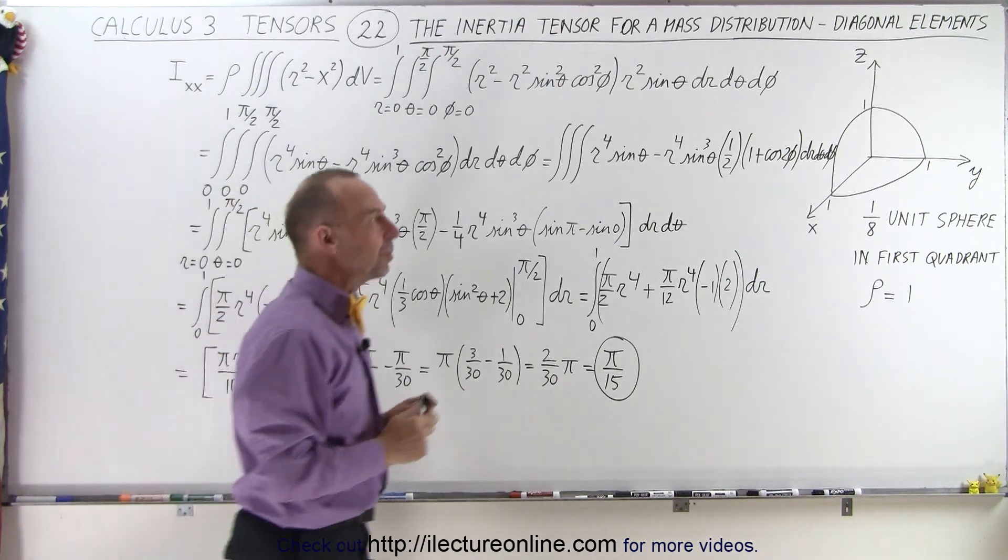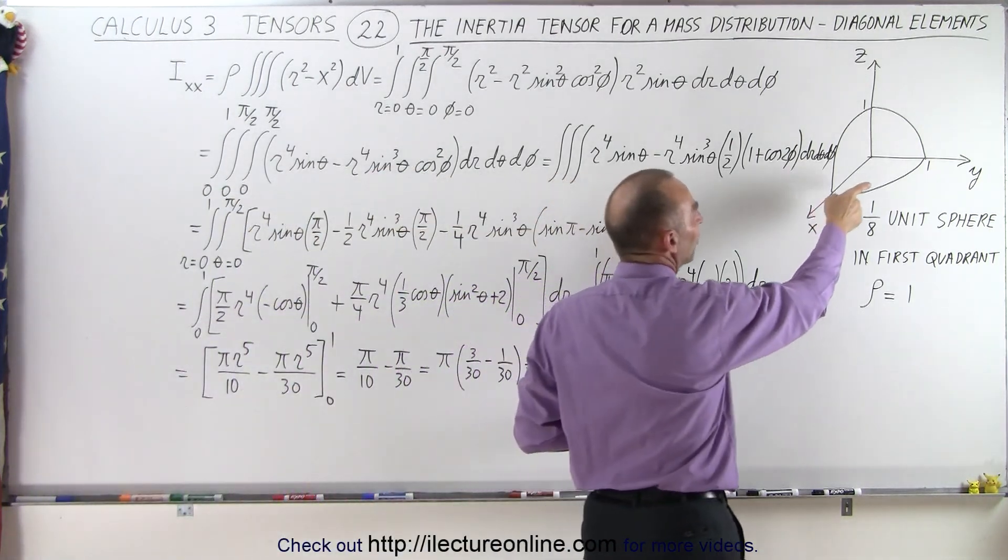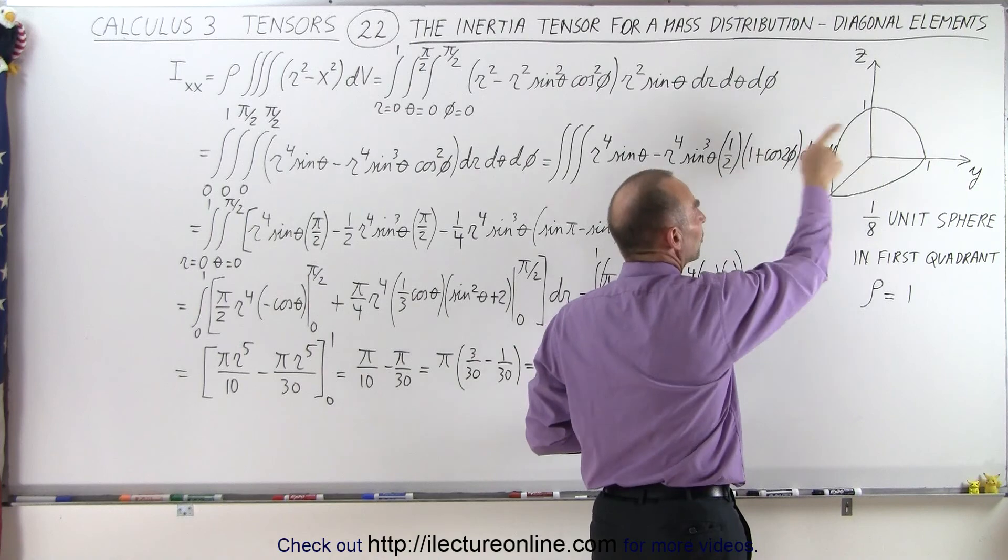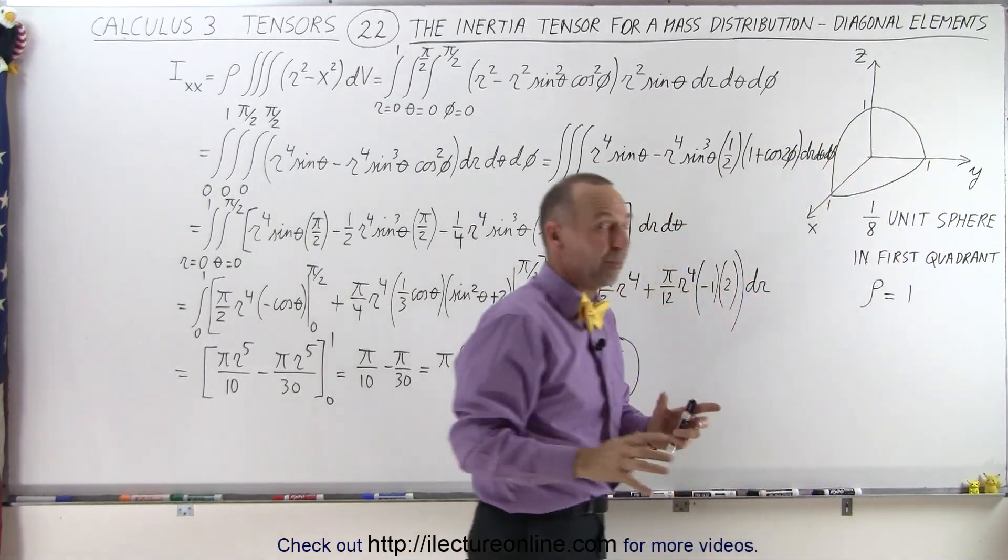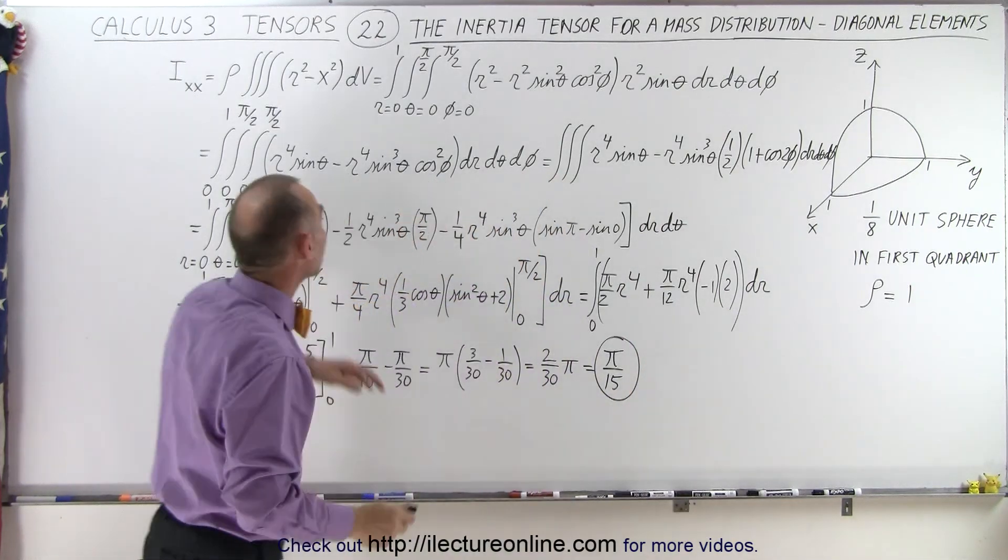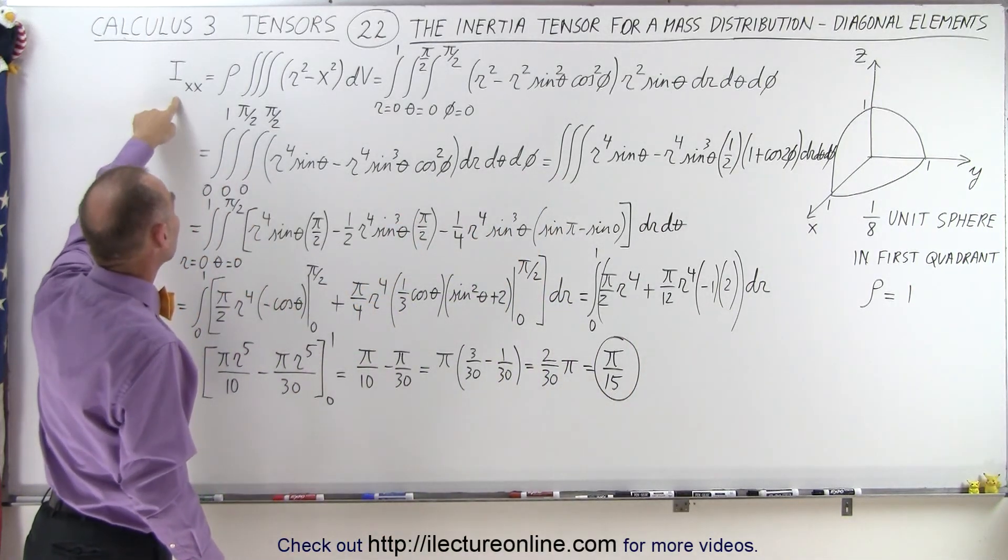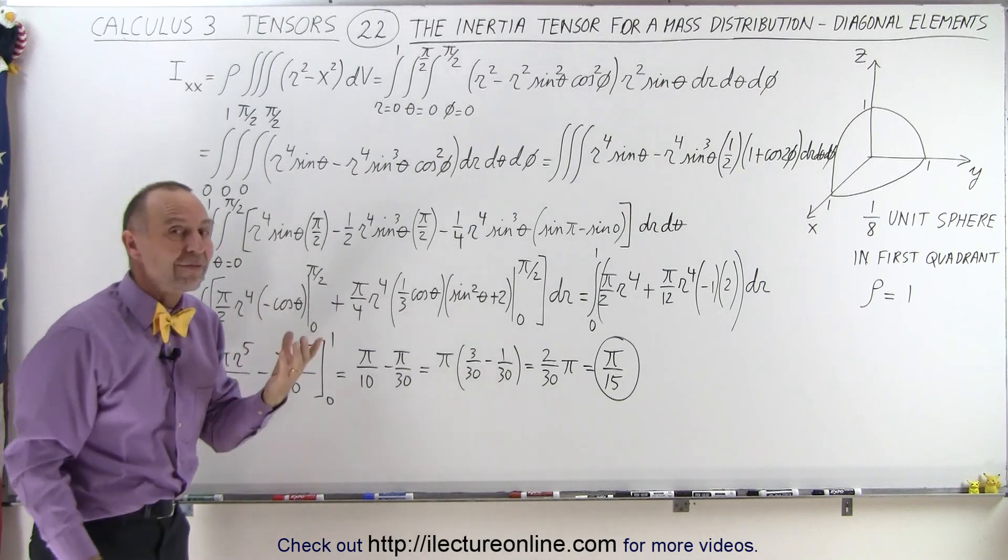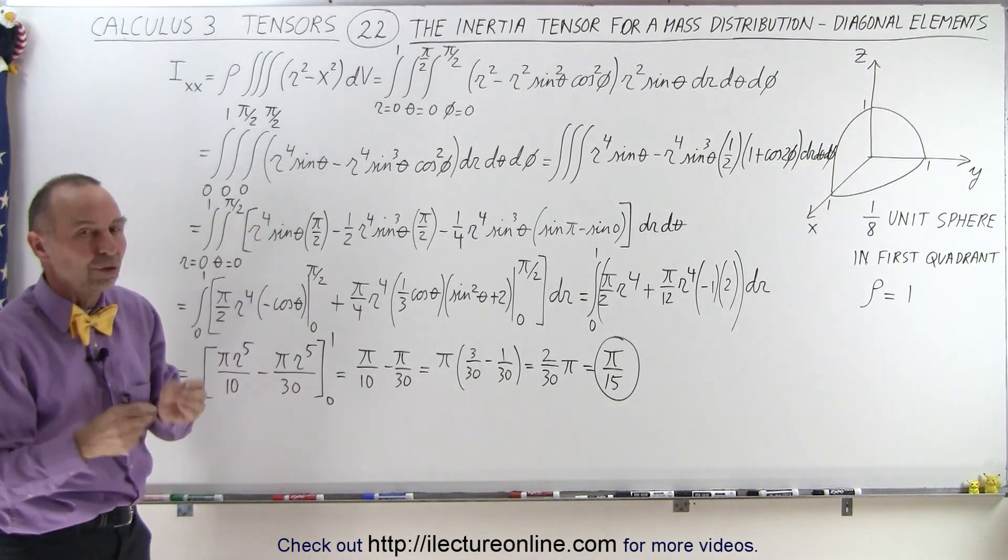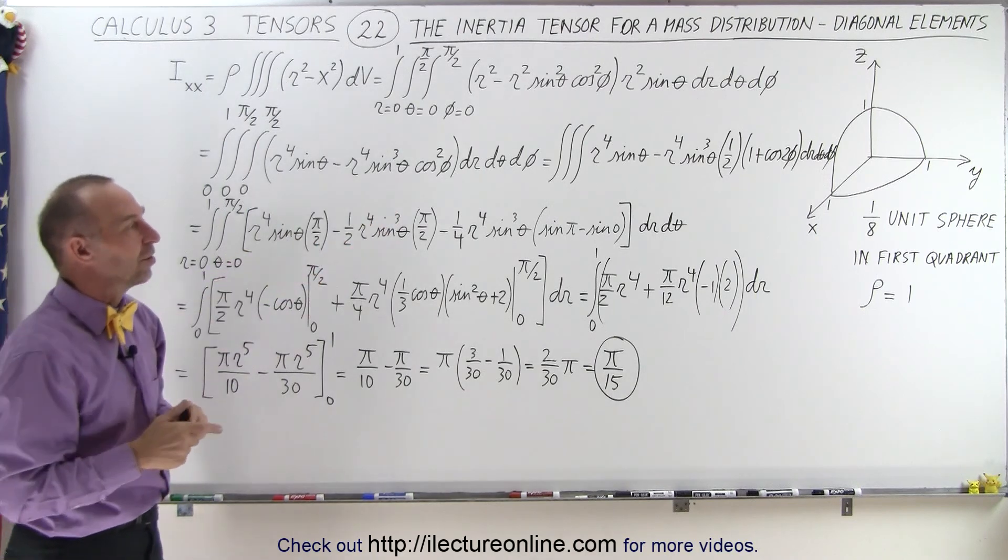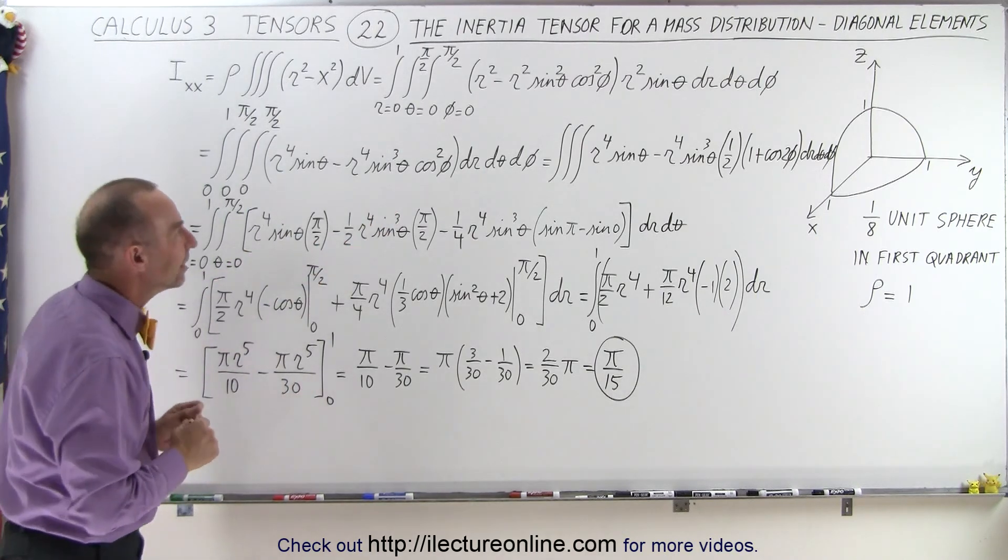Of course we have to do that for all diagonal elements and for all off-diagonal elements. But because of the symmetry, notice that we should get the very same result as we rotate this around the x-axis versus the y-axis versus the z-axis. So I'm assuming that whatever we find to be the moment of inertia element for Ixx, we find the same value for Iyy and for Izz. All three diagonal elements should have the same value because of the symmetry, and it turns out that's indeed the case.